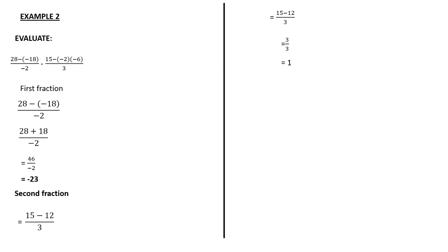Now we combine the two results: negative 23 minus positive 1. These are two numbers with the same sign, so we add them and retain the sign. Negative 23 minus 1 equals negative 24. That is the final answer.